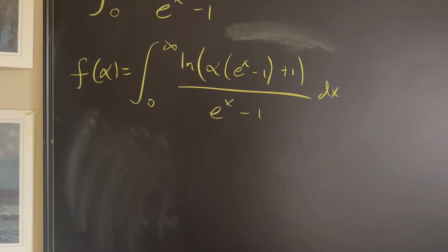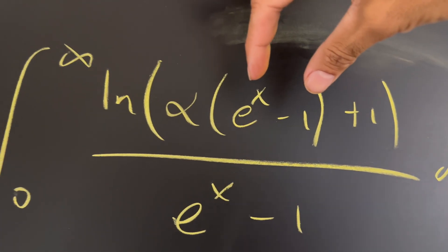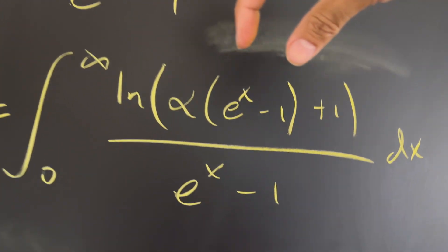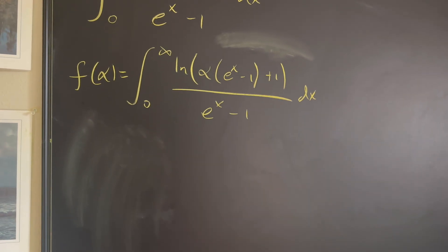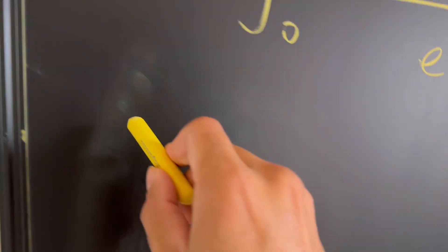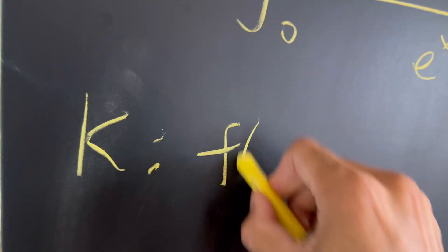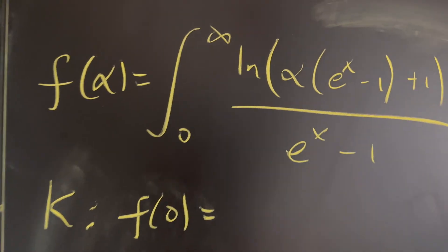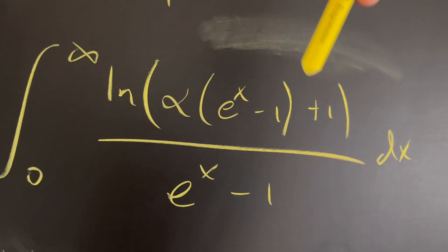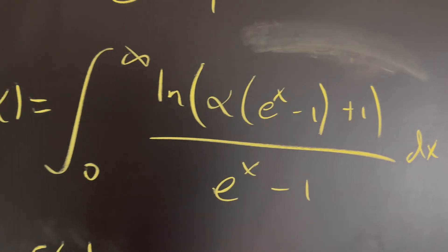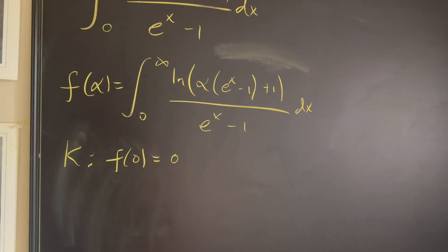Back to our integral — one of the reasons I chose it is because of the e^x minus one. Now, what do we know? If we make alpha equal to zero, we have zero times e^x minus one, plus one — so we just have the natural log of one, making the entire numerator zero and the integral zero. That's our initial condition: f(0) = 0.